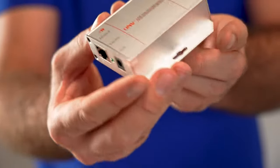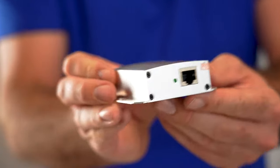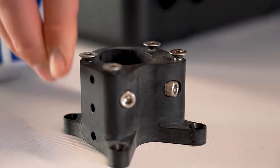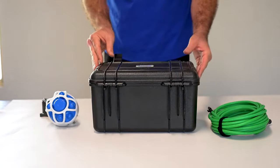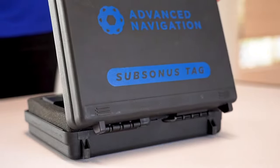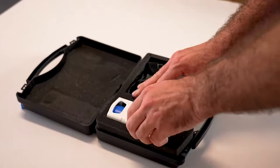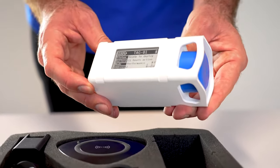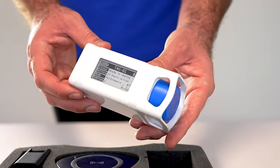a power over Ethernet injector, and a pole mount bracket. If you require a transponder, the Subsonus Tag kit contains a tracking device and includes a wireless charger.